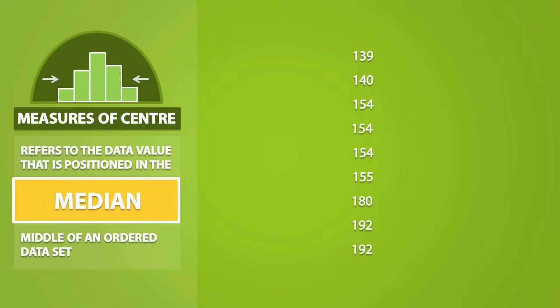We can clearly see that the number 154 is in the middle of the dataset because there are 4 data points above it and 4 data points below it. So the median of this dataset is equal to 154.